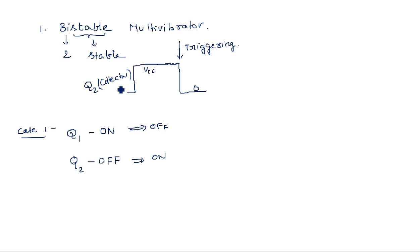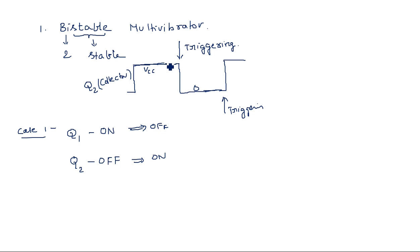After the triggering pulse is applied, Q2 is now ON, so Q2's collector output is zero. This new state is again stable until you apply one more triggering pulse. As this multivibrator has two stable states, it is called a bistable multivibrator. The stable states are disturbed by the application of an external triggering pulse.